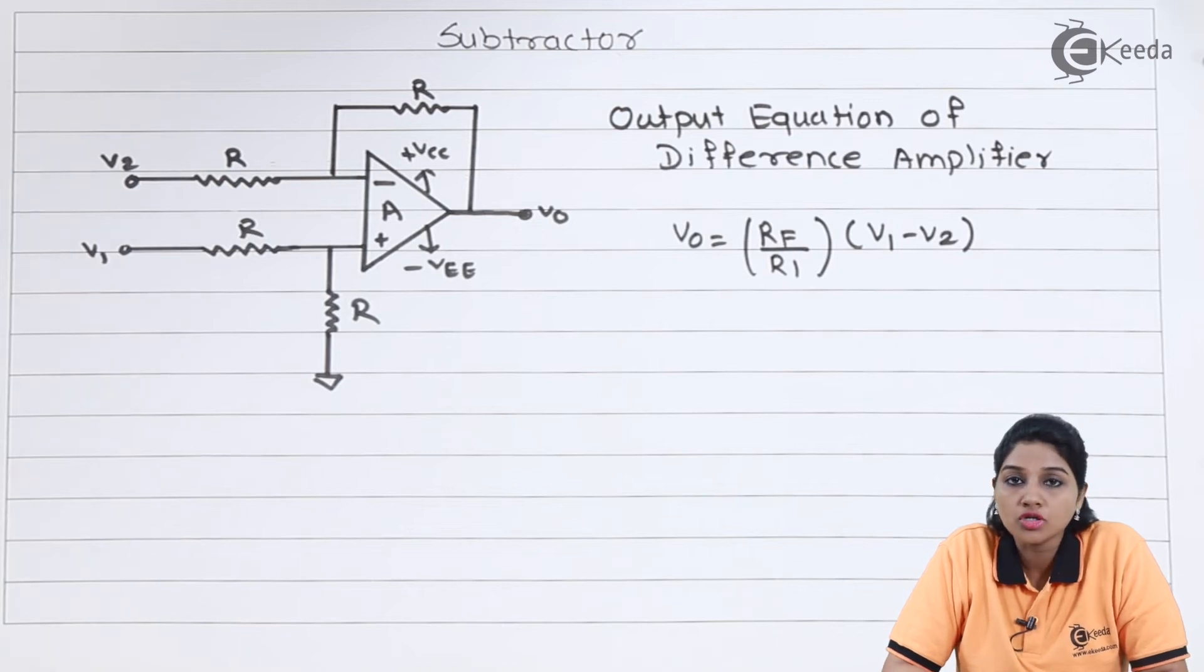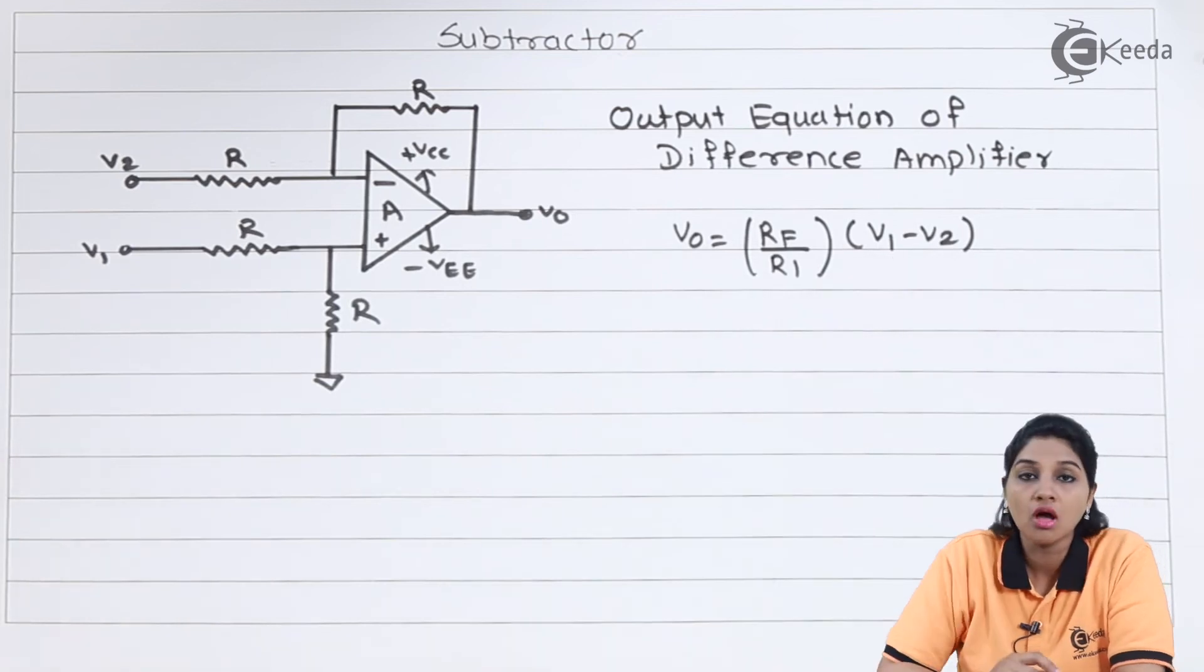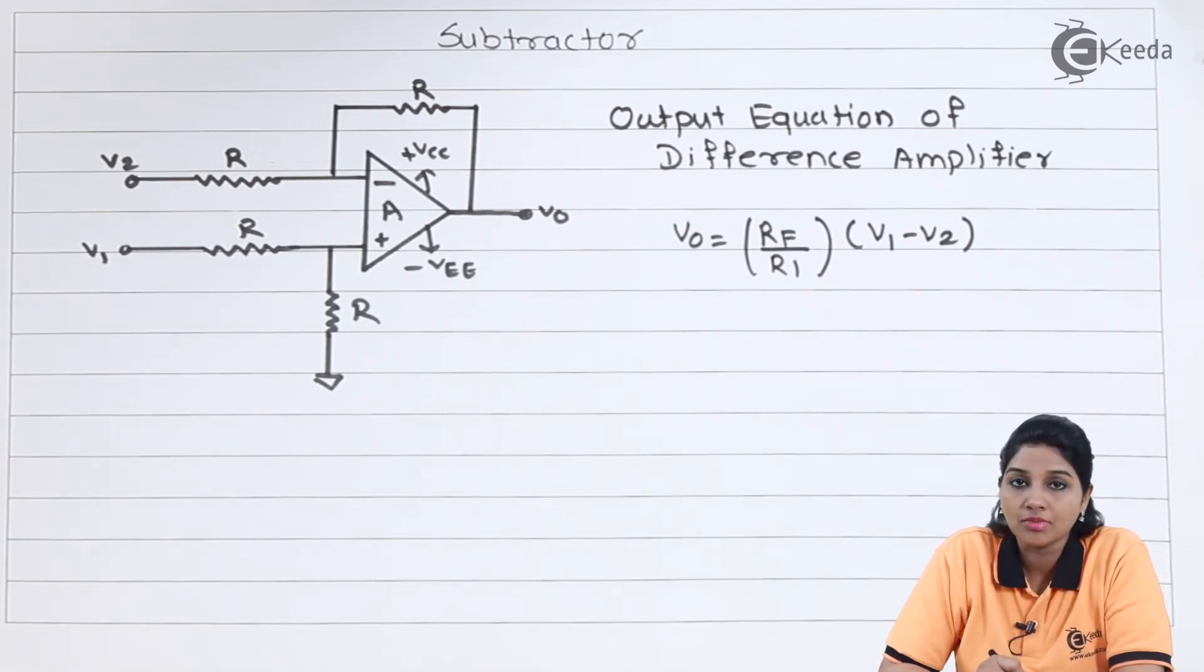So when we combine the two equations, we will get final equation as V0 equals RF by R1 times V1 minus V2, where RF by R1 is called as gain of difference amplifier.